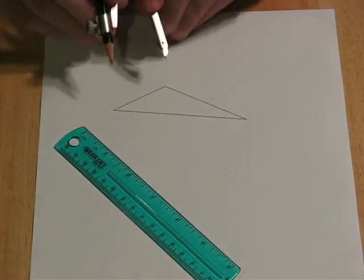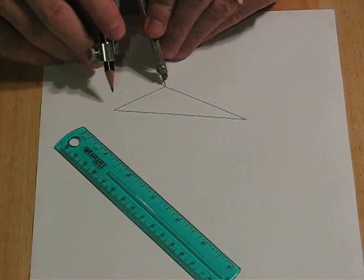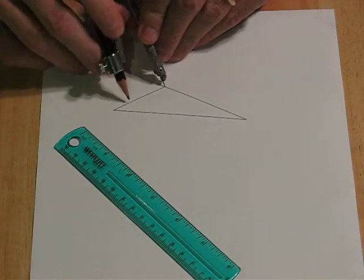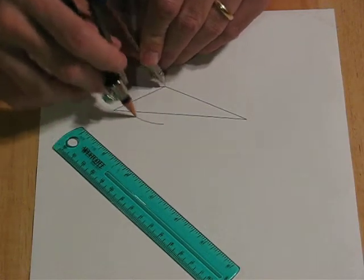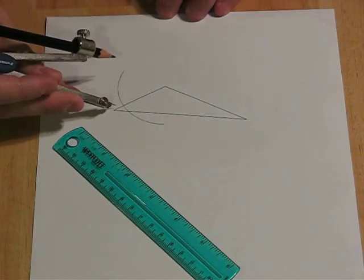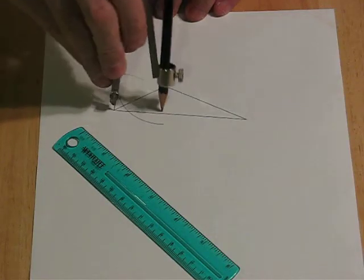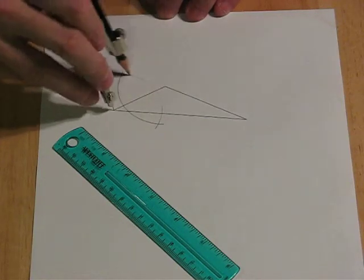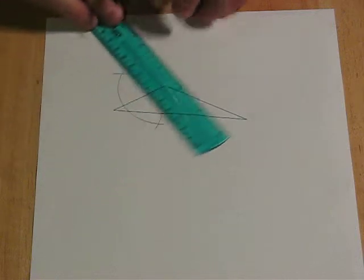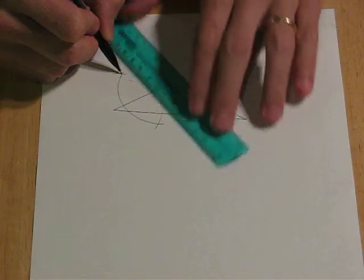We start by bisecting a side, so I'll bisect this side. So we stretch the compass out to more than halfway and we make an arc. And then keeping the same radius, we stick it at the other end, and we get two intersection points there and there. And those two points give me the perpendicular bisector of this side.